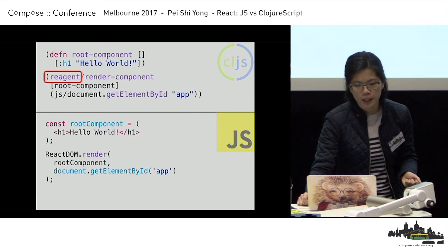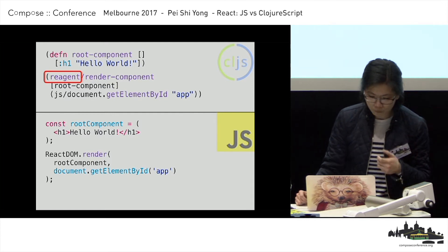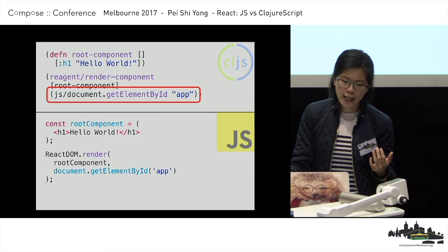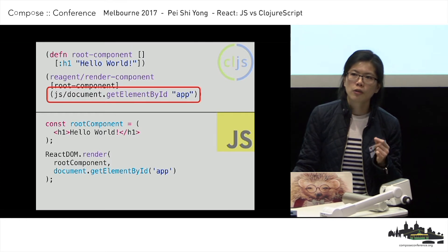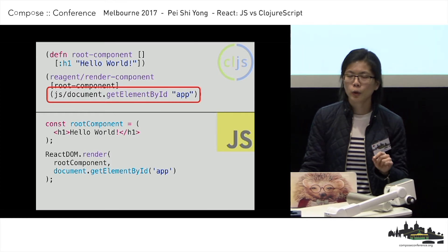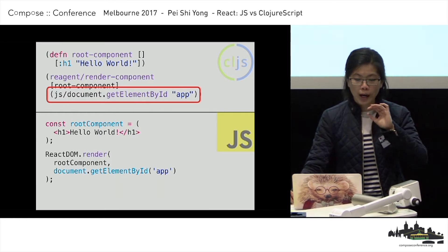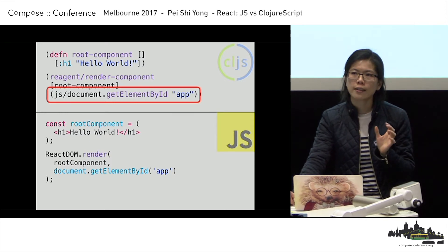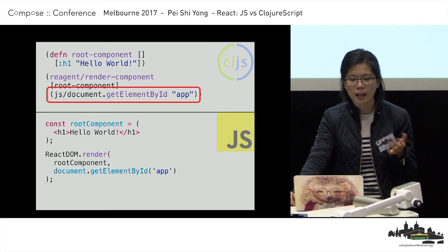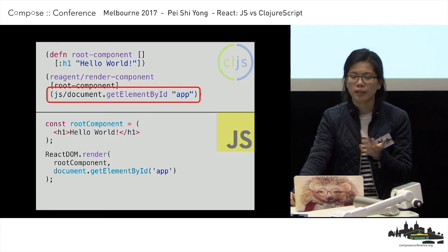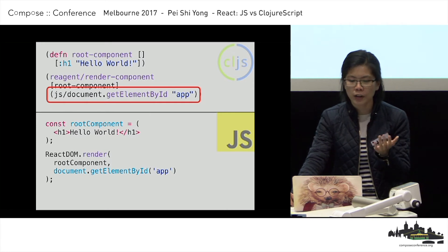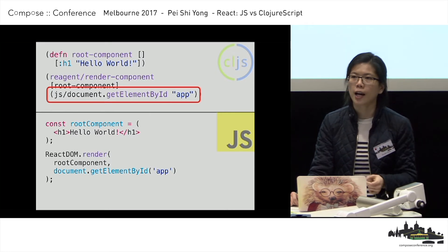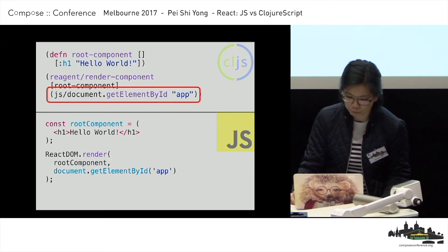To my surprise, in ClojureScript it's actually really easy to do JavaScript interop. You are given a global JS namespace, and you just call the function however you would normally call it — for example, document.getElementById. That's pretty standard.